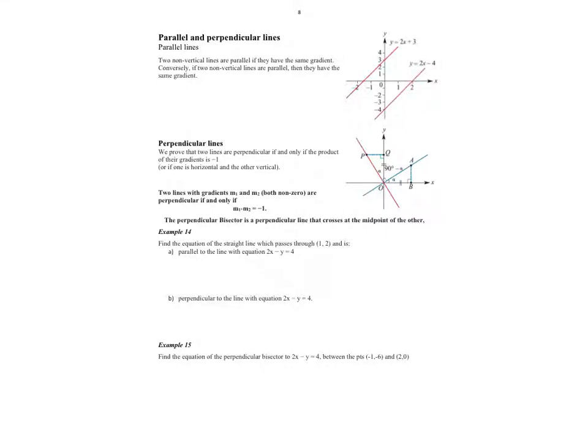If we consider parallel and perpendicular lines, parallel lines are any two lines that have the same gradient. If we consider these two lines over here on the right, these are parallel because they both have the same gradient of 2.